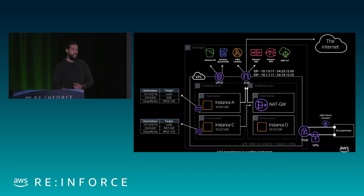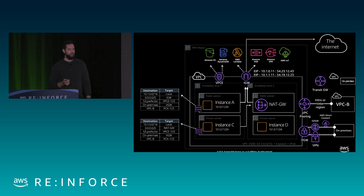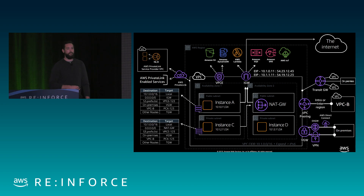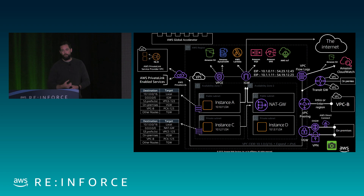We also have VPC endpoints for private connectivity to S3 and DynamoDB. We have a VGW or virtual private gateway, which connects to Direct Connect. We have VPC peering, which connects to other VPCs. We have Transit Gateway — launched at reInvent last year — a highly scalable mechanism to connect up to 5,000 VPCs. We also have AWS Private Link. VPC flow logs give you some form of visibility. And global accelerator sits outside at our edge locations. This is what a VPC architecture really looks like today with all the bolt-on options.